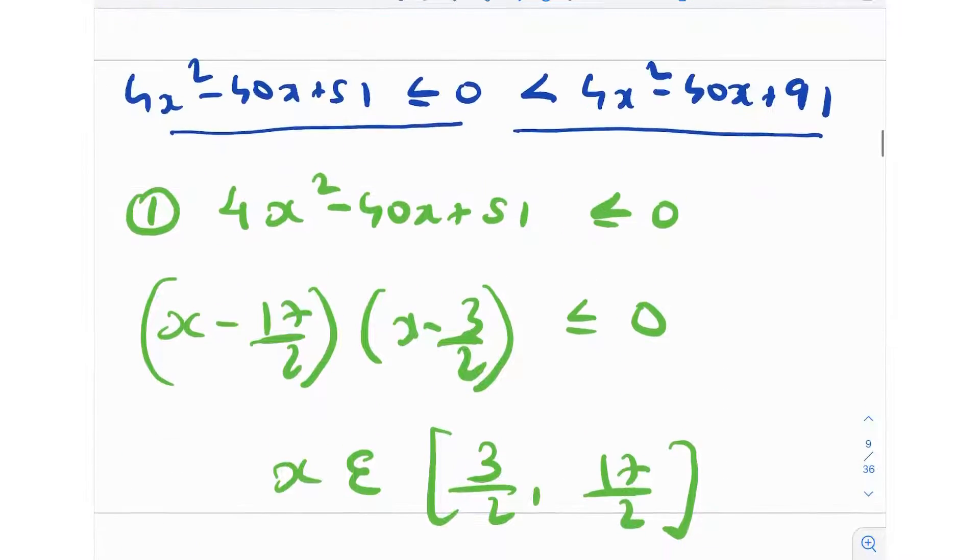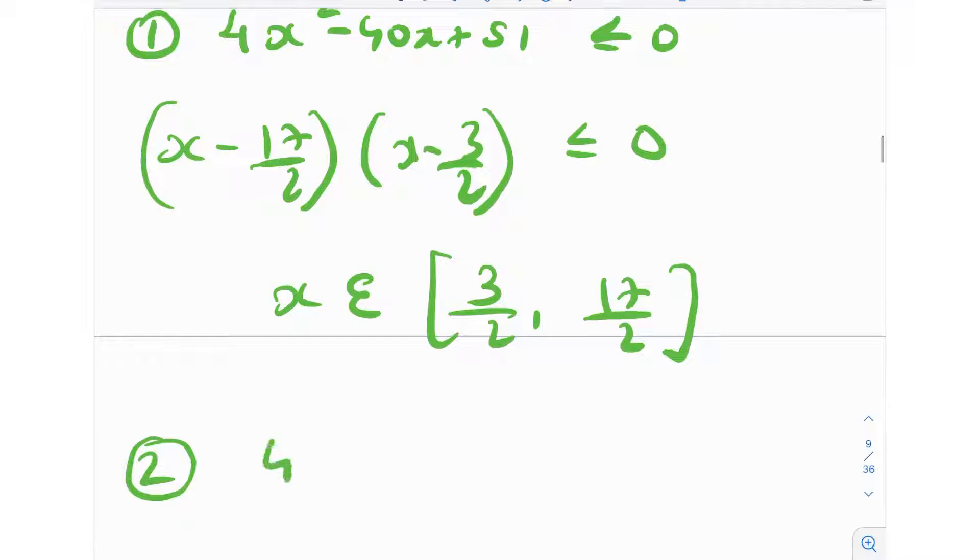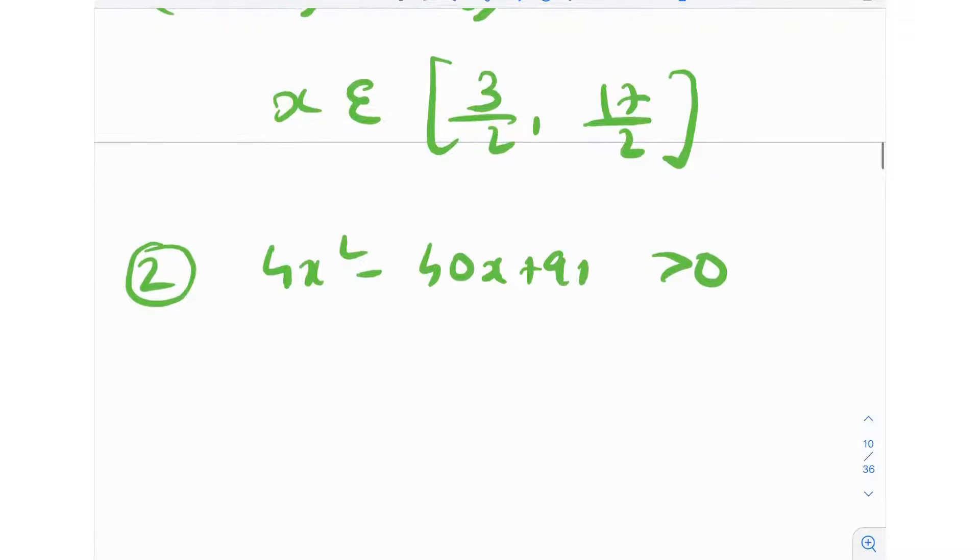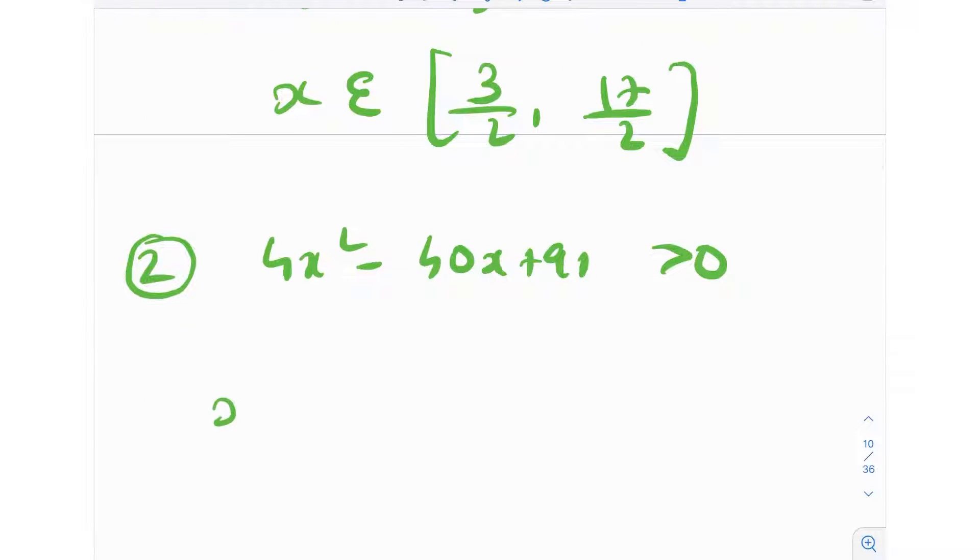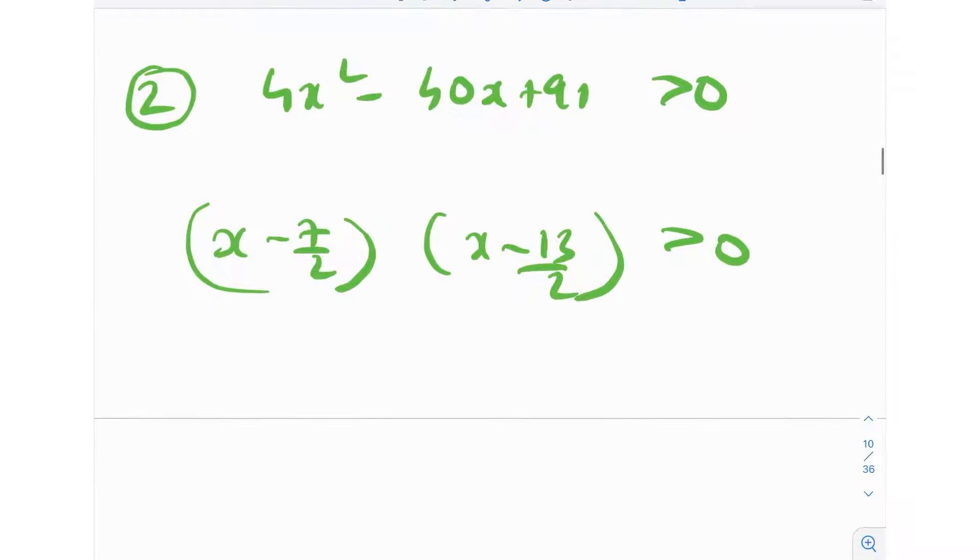The second inequality is 4x² - 40x + 91 > 0. This can also be factorized as (x - 7/2)(x - 13/2) > 0. Again, just by using the wavy curve, we know that x belongs to (-∞, 7/2) ∪ (13/2, ∞), and over here we have the open interval.